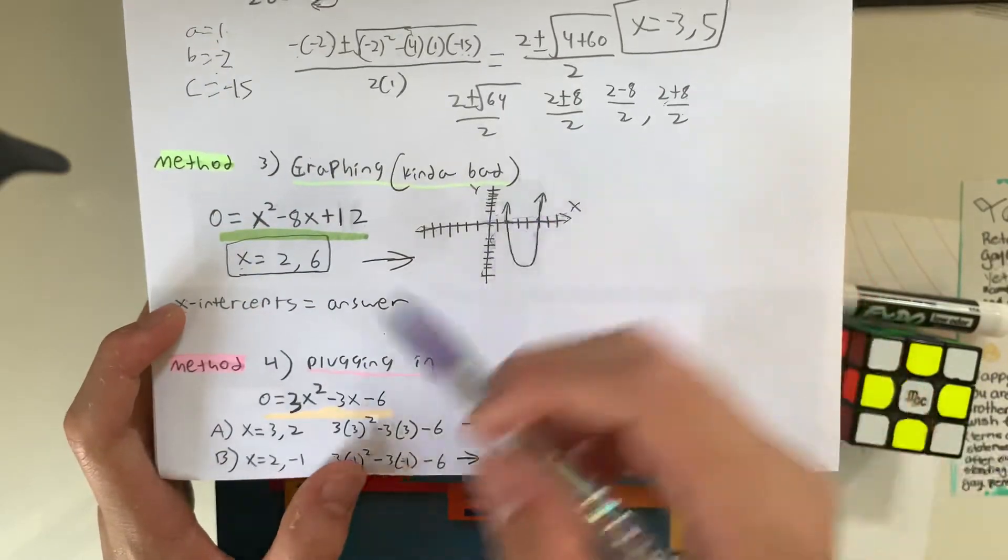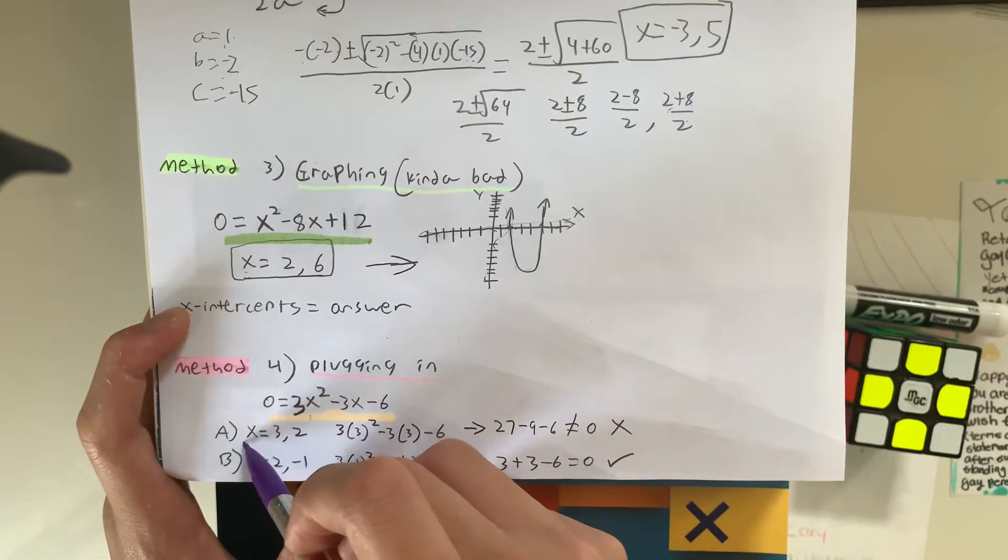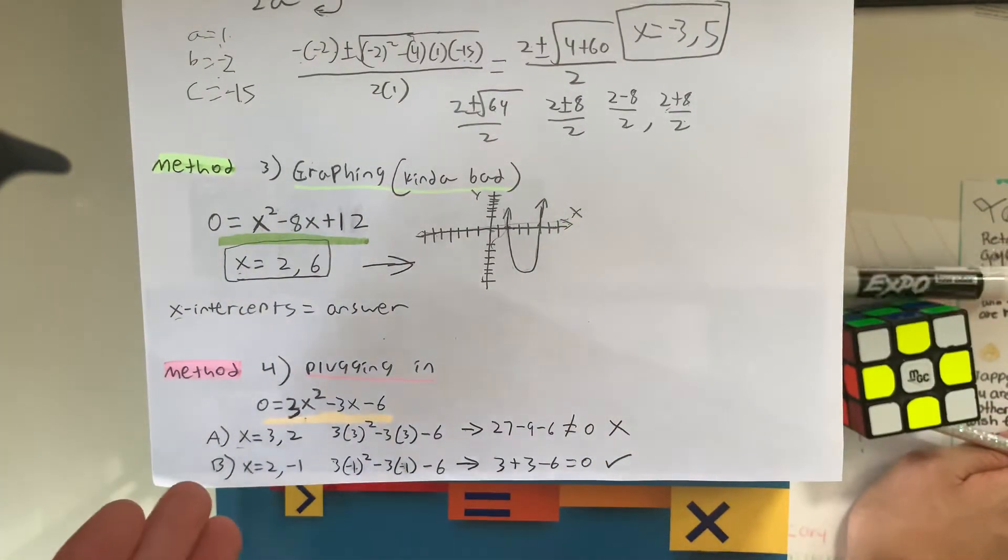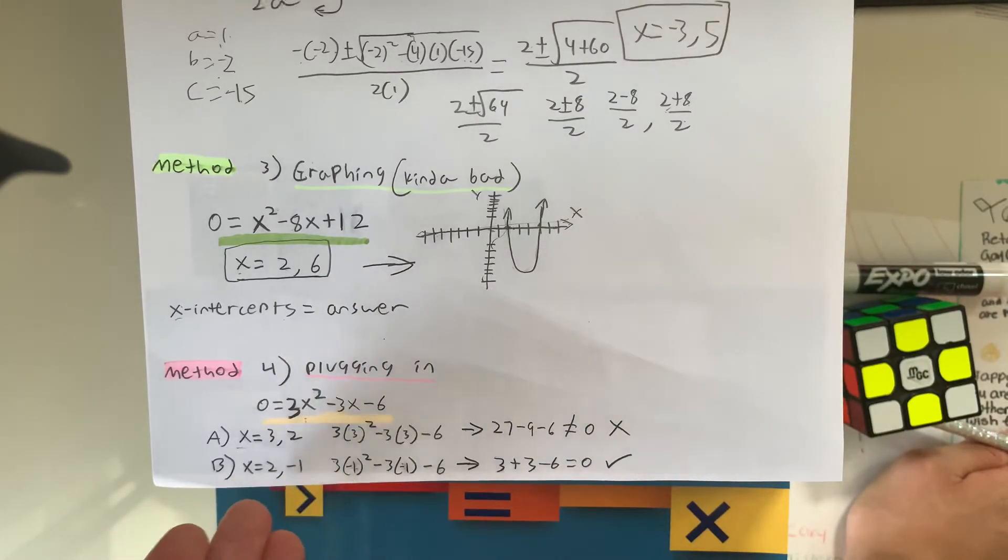So, what you're going to do is plug in the values of x as the answers are given, and see which ones are true. So, in this case, I only have two answers, 3 and 2, or 2 and negative 1.